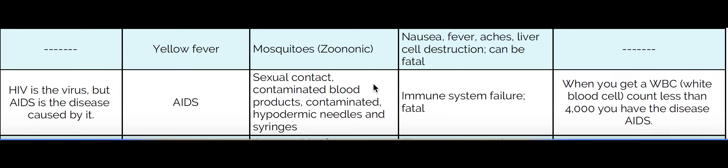When you have a normal white blood cell count, it's about 14,000 white blood cells per milliliter of blood. When you get an infection, that count can go as high as 35,000. But over time it's going to start decreasing because the helper T cells are losing the battle. Once that white blood count gets down to about 4,000, then you are said to have AIDS. Up until that time, you are just HIV positive.